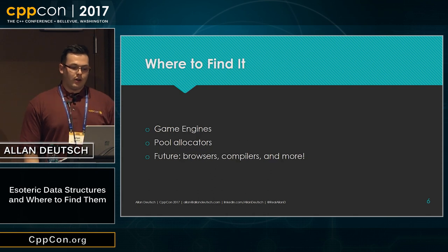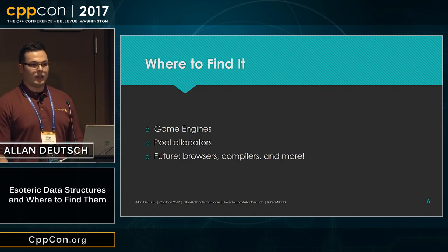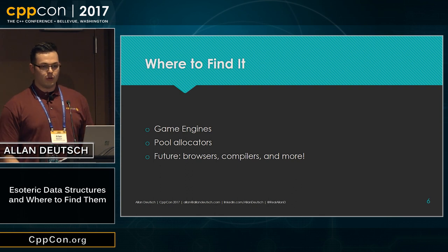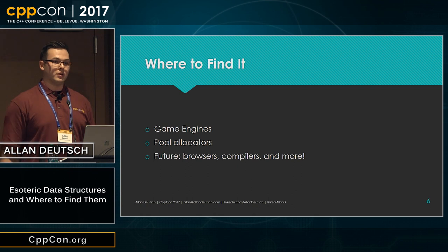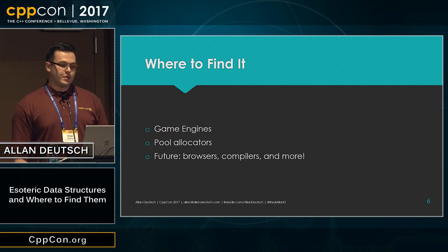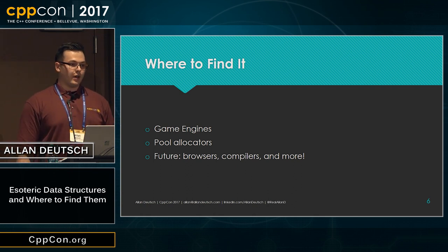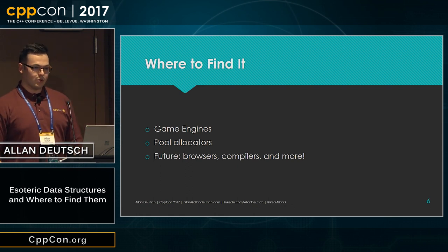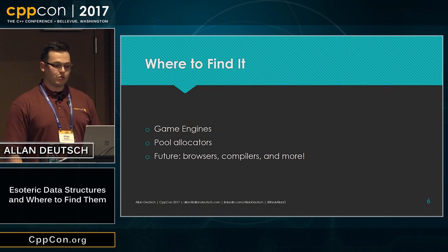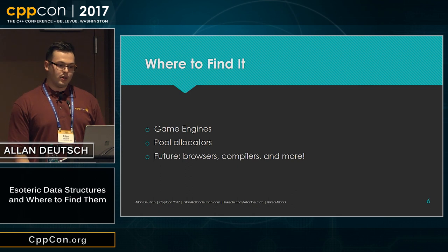Slot map can be found in game engines and is also very similar to a pool allocator. If you're a bit confused about what it is, just think of it as a pool allocator with something resembling a map interface. In the future, once it's standardized, I expect to see it in browsers, compilers, and more, as those are some of the interest groups that have shown interest in having it.